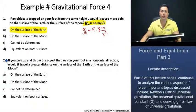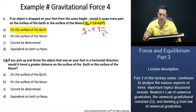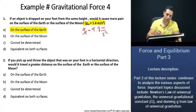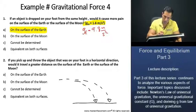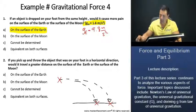Now let's look at the second part of our question. If you pick up and throw the object that was on your foot in a horizontal direction, would it travel a greater distance on the surface of the Earth or the surface of the Moon? Let's think about this. Let's say the object is thrown as such. Here is the initial object. Here is where it lands.